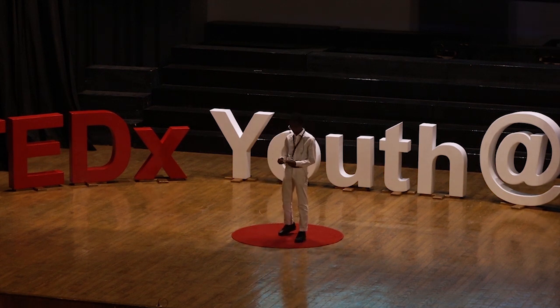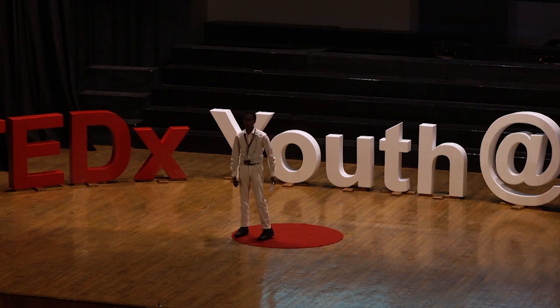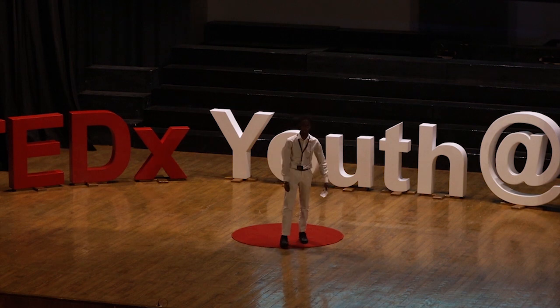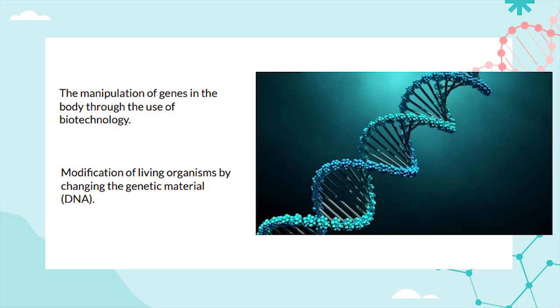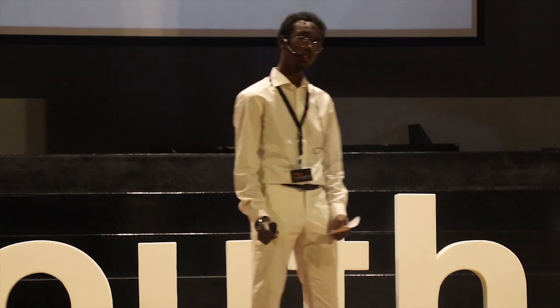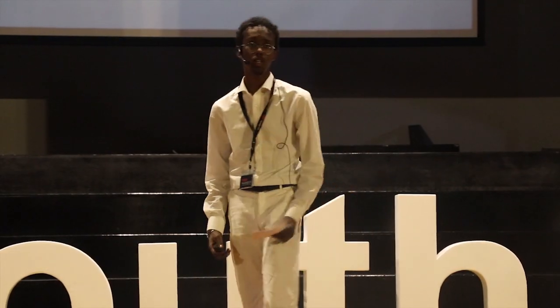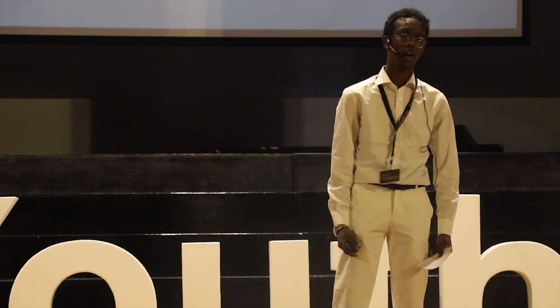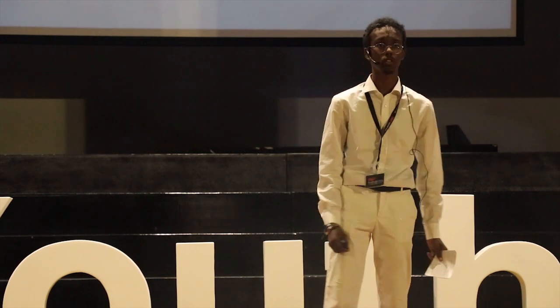Before we go into this topic, we need to understand a little bit about genetic engineering. Genetic engineering is basically the manipulation of genes through the use of biotechnology. Scientists edit or delete a copy of the gene in a person's DNA. The gene is what makes up our living characteristics — our eye color, our hair color, everything about us. Changing the gene individually changes what we do.